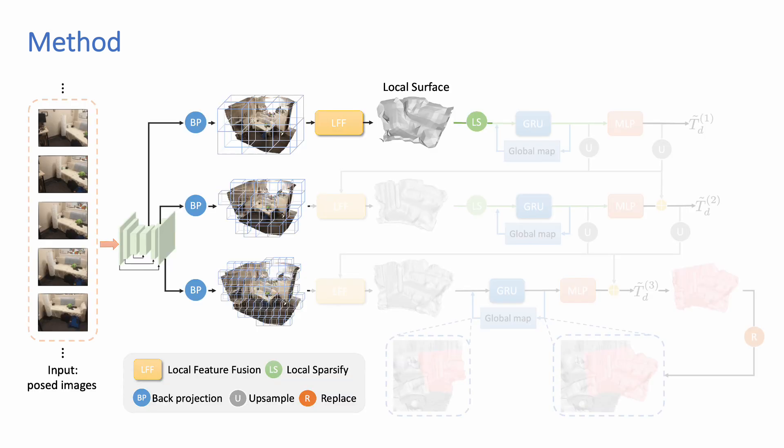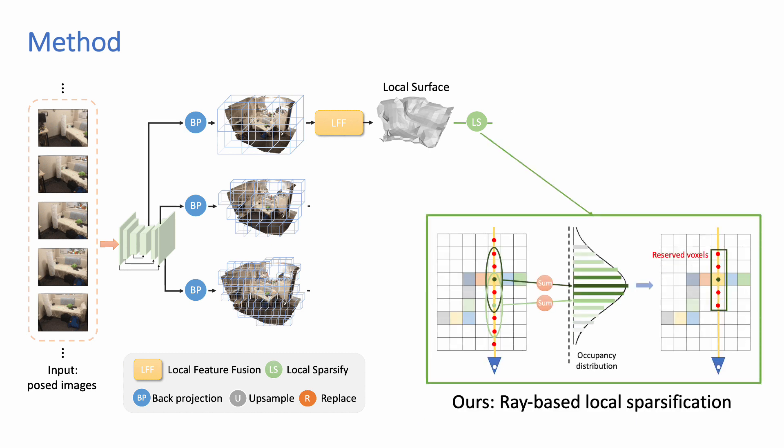Then we use the predicted local occupancy to sparsify the feature volume. Instead of relying on a fixed global threshold, we propose to sparsify along visual rays, which guarantees at least one voxel is preserved for each ray.